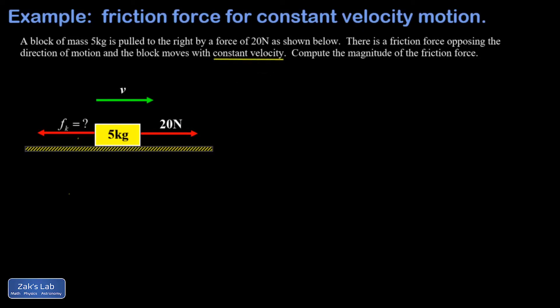Immediately when I see that constant velocity, I say the net force must be zero. That's because constant velocity means the acceleration must be zero, and that means the net force is zero in the vertical and horizontal directions.